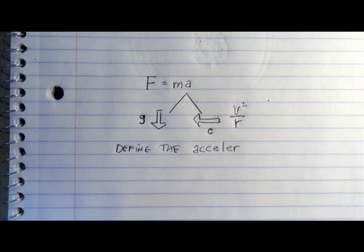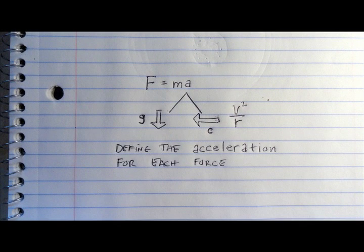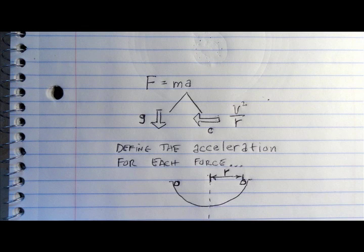The radial or centripetal acceleration is v squared over r. In this case r is measured from the center of the bowl to the center of the ball.